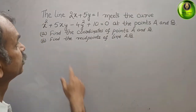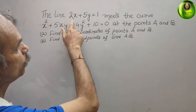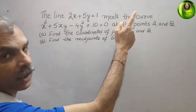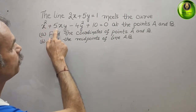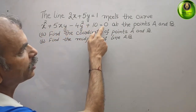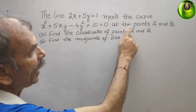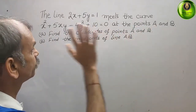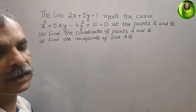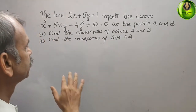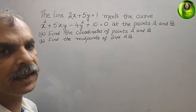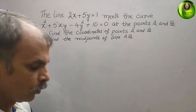The question is: the line 2x + 5y = 1 meets the curve x² + 5xy - 4y² + 10 = 0 at points A and B. The questions are: first, find the coordinates of points A and B; second, find the midpoint of the line AB.